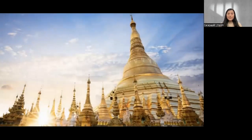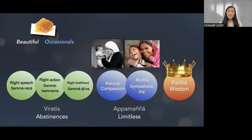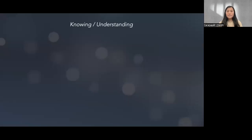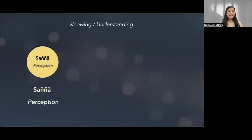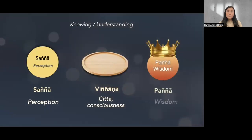Last time we finished looking at all the beautiful cetasikas, including the universal ones and the occasional ones. We have basically finished with all 52 cetasikas. Today we are going to start with a little bit more exploration about knowing and understanding. We are going to look at three phenomena: two mental factors and one viññāṇa, and see what the differences are. The first one is saññā — perception. The second is viññāṇa, a synonym of citta meaning consciousness. And then we have paññā, which is wisdom.